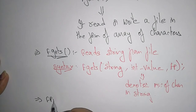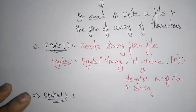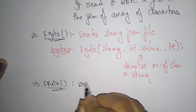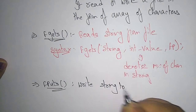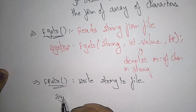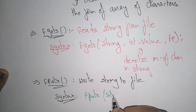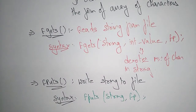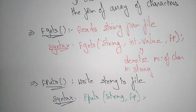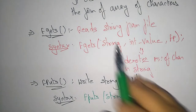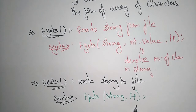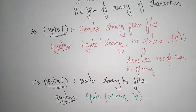Now let us see fputs. Put means writing — it is used to write a string to a file. The syntax is: fputs(string, file_pointer). For writing, you don't need to mention the int value, because you want to write the string completely into the file. Whereas in fgets, you specify how many characters you want to read. That's why fgets contains three arguments and fputs contains only two arguments.